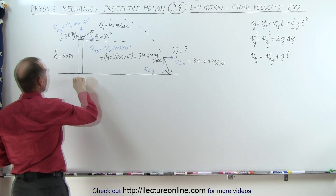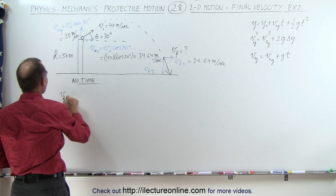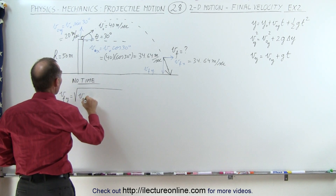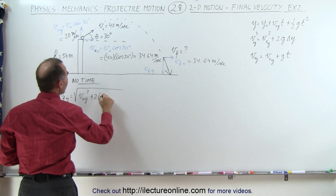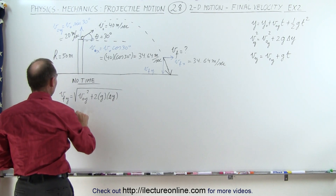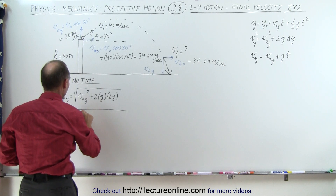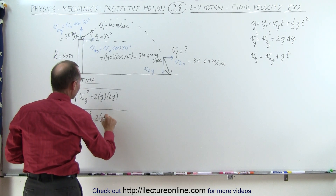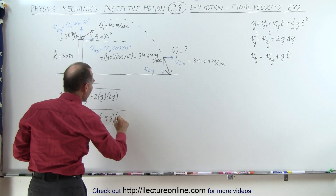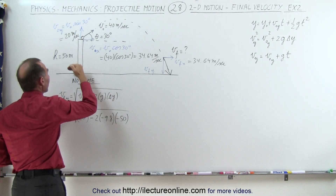With no time available, we use the equation: v_final_y equals the square root of v_initial_y squared plus 2 times g times the change in height. Plugging in numbers: the square root of 20 squared minus 2 times 9.8 times negative 50. The change in height is negative 50 because we start at 50 meters and come down to zero.